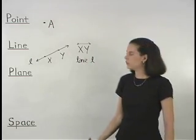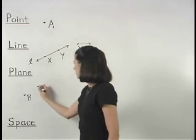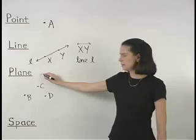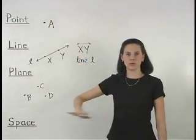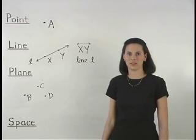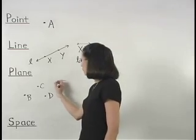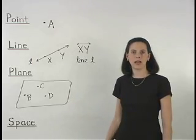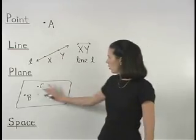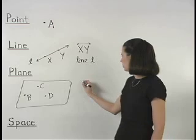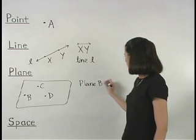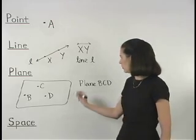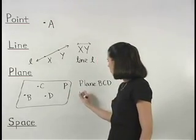If we have three points, such as points B, C, and D, we can introduce our next figure in geometry, which is called a plane. Think of a plane as a wall or the floor of a room — a flat surface that has no thickness. To represent the idea of a plane, we can use a four-sided figure such as the one shown here. But it's important to understand that a plane actually has no edges; it extends forever in all directions. We can call this figure plane BCD. Planes can also be represented using a single capital letter, so if we use a P to label this plane, we can call it plane P.